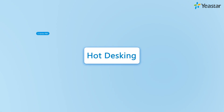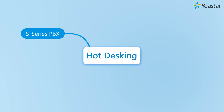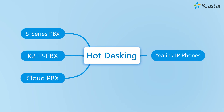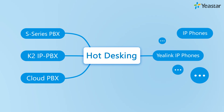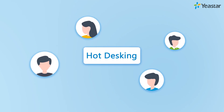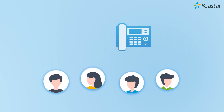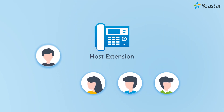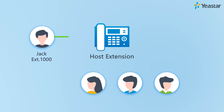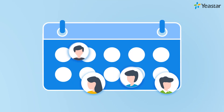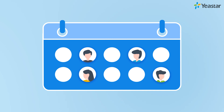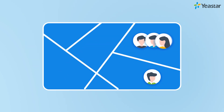The Hot Desking feature is available on Yeastar S-Series PBX, K2, and Yeastar Cloud PBX together with A-Link IP phones. More brands of IP phones will be supported in the future. Hot Desking allows multiple users to share an IP phone in the office but use their own extension number to place calls or answer calls.